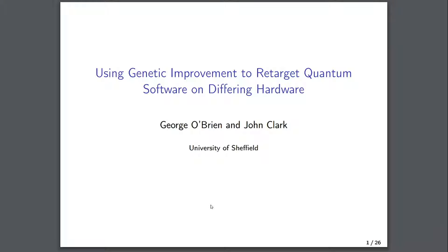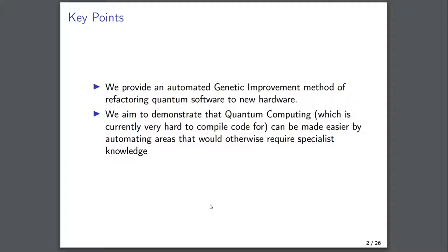I'm here on behalf of the University of Sheffield to talk about our method of taking genetic improvement and using it on quantum programs to retarget those programs on new or different hardware that may not have the properties they were originally intended to be run on. The main point is that we have this genetic improvement method, it's automated, and it lets us refactor quantum software to new hardware.